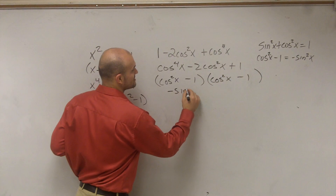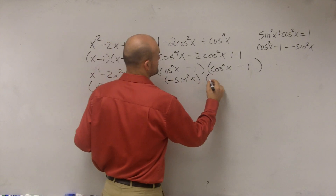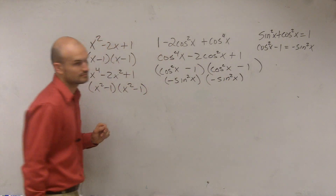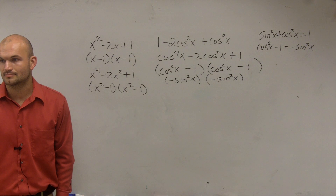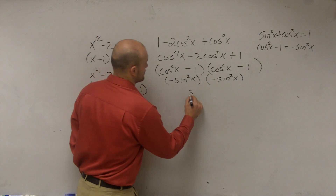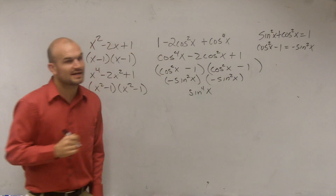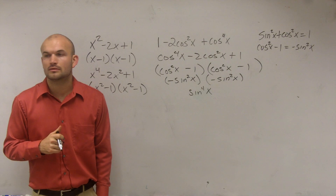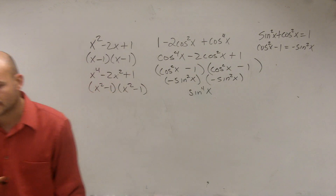Therefore, you can write this as negative sin squared of x times negative sin squared of x, which gives you sin to the fourth degree of x. And that would be your final answer.